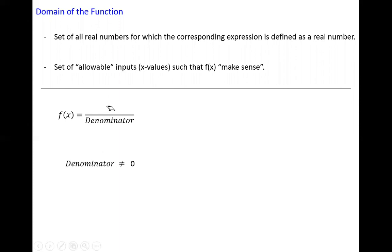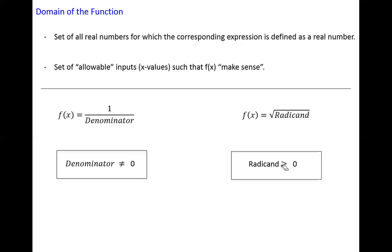The second type of function is a radical function. If we see a root function, and especially an even root — that means the square root, the fourth root, the sixth root, the eighth root, and so on — then the expression under the even root, which we call the radicand, must always be greater than or equal to zero. These are the two mathematical conditions we have to apply in order to get the domain.